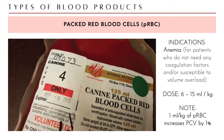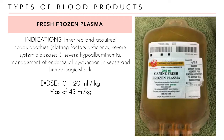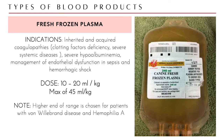Most veterinarians follow the rule that 1 ml per kg of PRBCs increases the PCV by 1%. For example, if a patient's PCV is 12 and you want it at 22, you calculate the ml of blood needed from that rule. Fresh frozen plasma is indicated for coagulopathies, clotting factor deficiencies, and severe systemic diseases requiring extra protein support. The dose is 10 to 20 ml per kg.